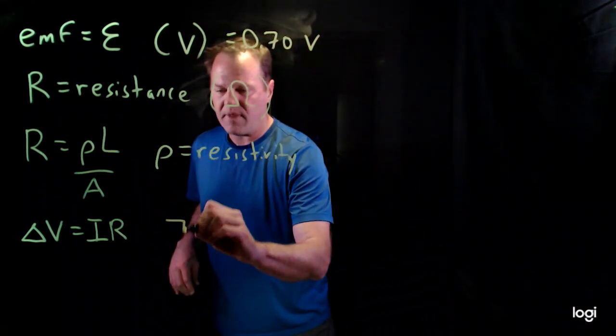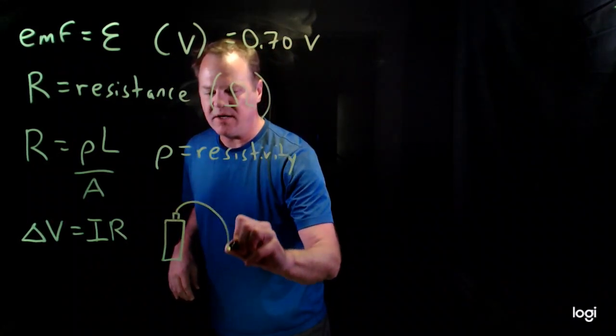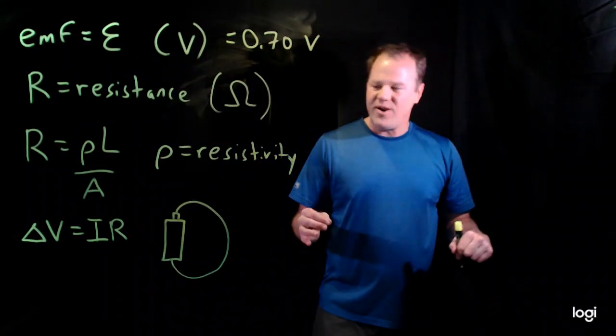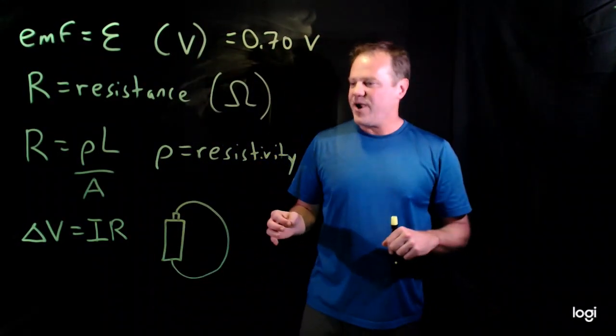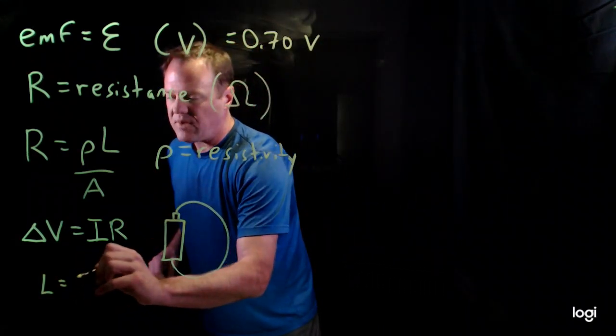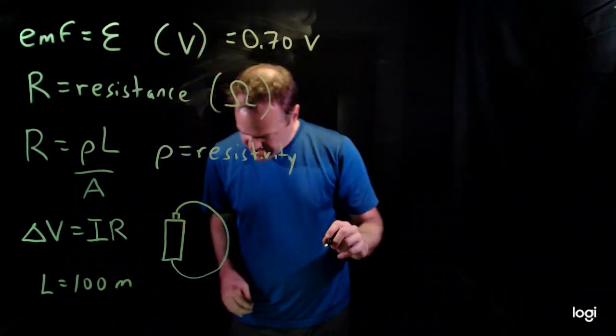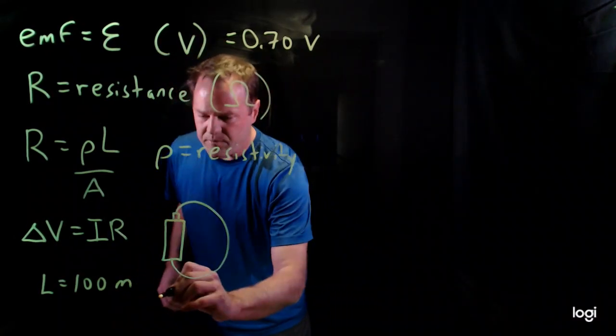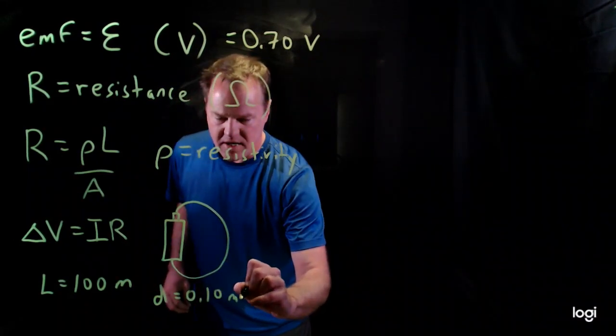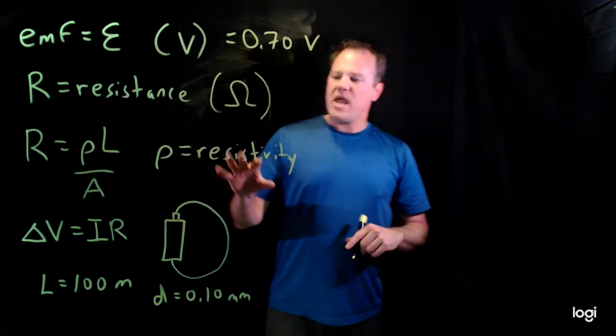So here's a fairly primitive drawing. Here's our battery. We connect it to a wire. Don't try this at home unless the wire is very thin or the wire is very long. Yeah, you could start a fire. But the length is given as a hundred meters. So obviously the picture is not to scale and the diameter is given as 0.10 millimeters. So a very thin, very long wire and it's made of copper.